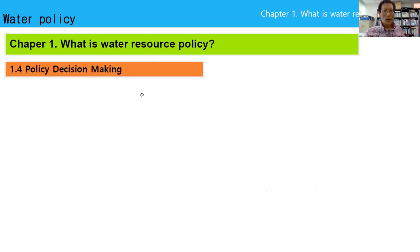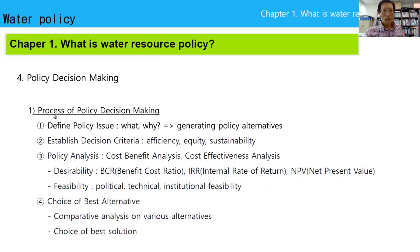Policy decision making: the process starts with identifying policy issues — what and why. Then generate policy alternatives and establish decision criteria such as efficiency, equity, and sustainability. Policy analysis including cost-benefit analysis follows, with criteria of desirability and feasibility. The last step is choice of the best alternative based on comparative analysis of various alternatives.